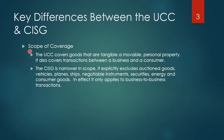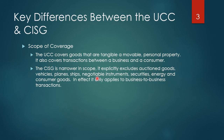Finally, regarding scope of coverage: the UCC governs goods that are tangible and movable personal property, which excludes real property. It also covers transactions between a business and a consumer, so if you walk into a retail establishment and purchase goods, that transaction is governed by the UCC. The CISG is narrower in scope — it does not include auction goods, vehicles, planes, ships, negotiable instruments, securities, energy, or consumer goods.